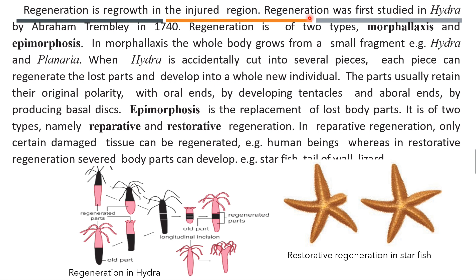Another type of asexual reproduction is regeneration — it is regrowth in the injured region. Regeneration in Hydra was studied by Abraham Trembley in 1748. There are two types: morpholaxis and epimorphosis. Morpholaxis is when the whole body grows from a small fragment, as seen in Hydra and Planaria.